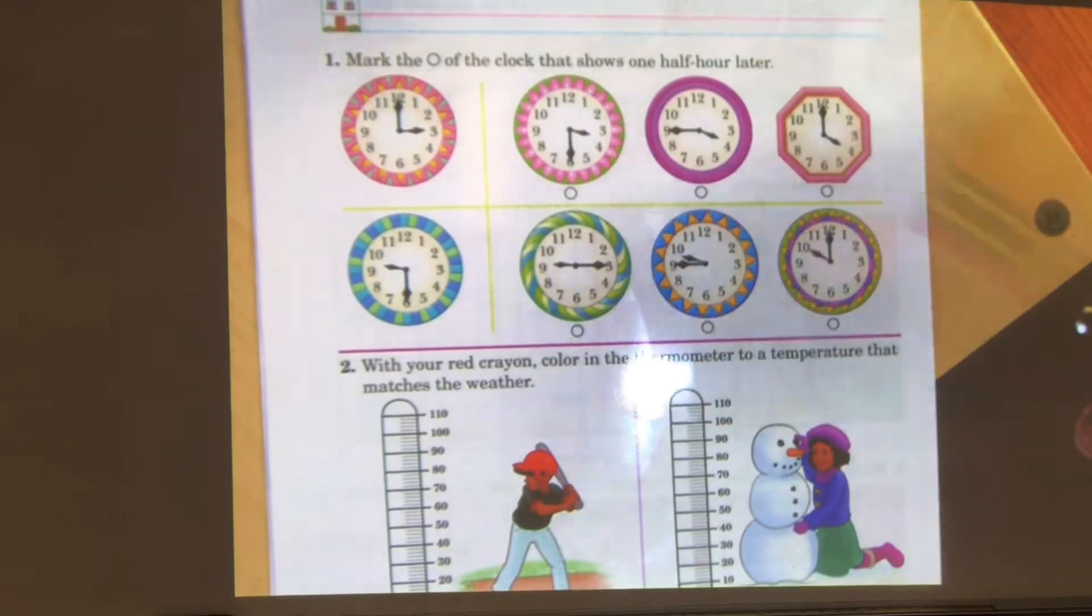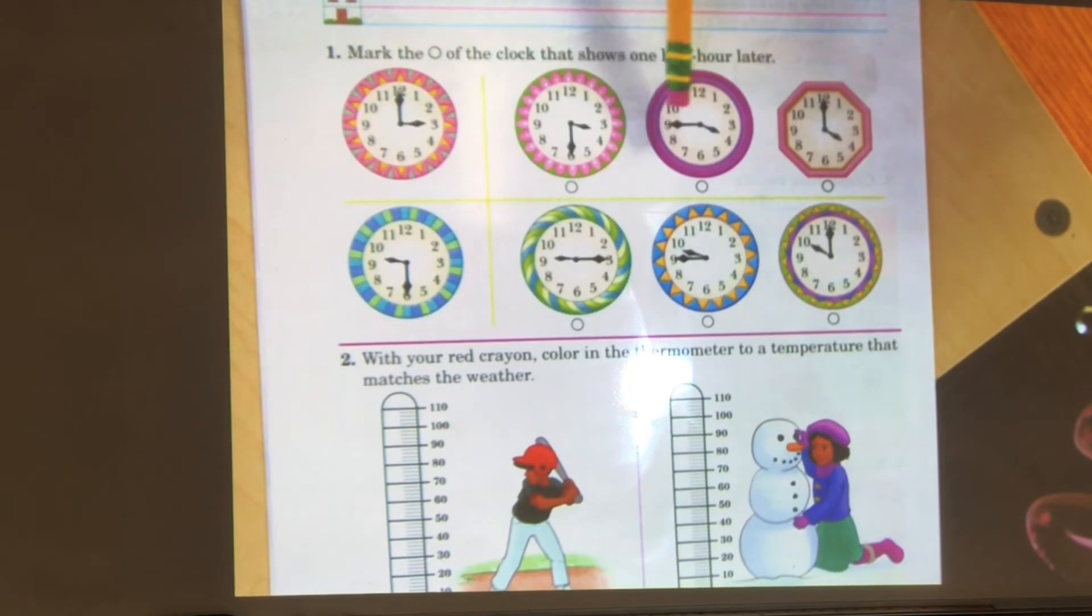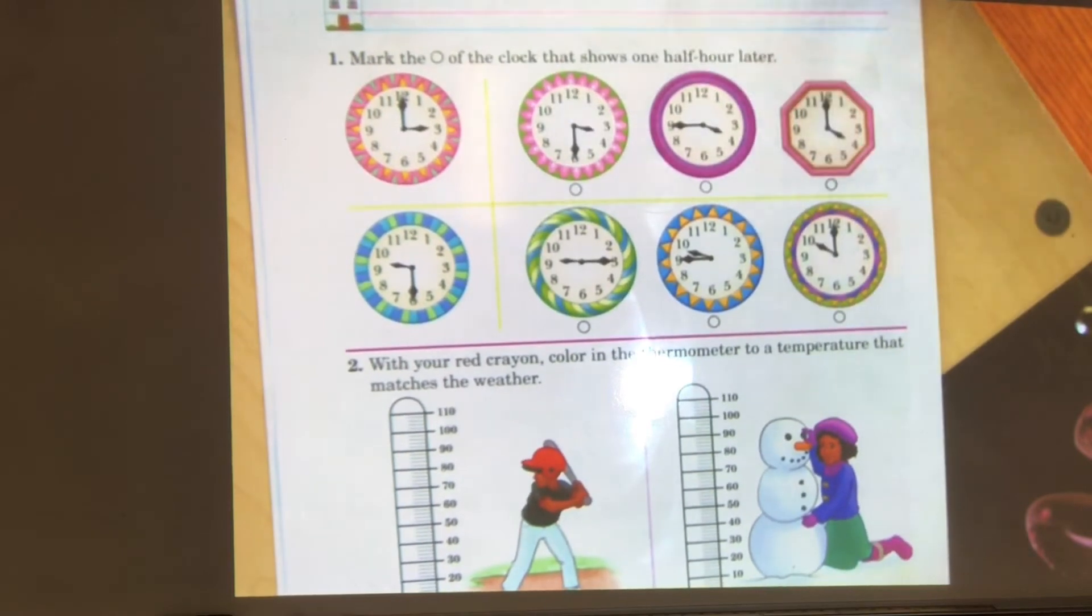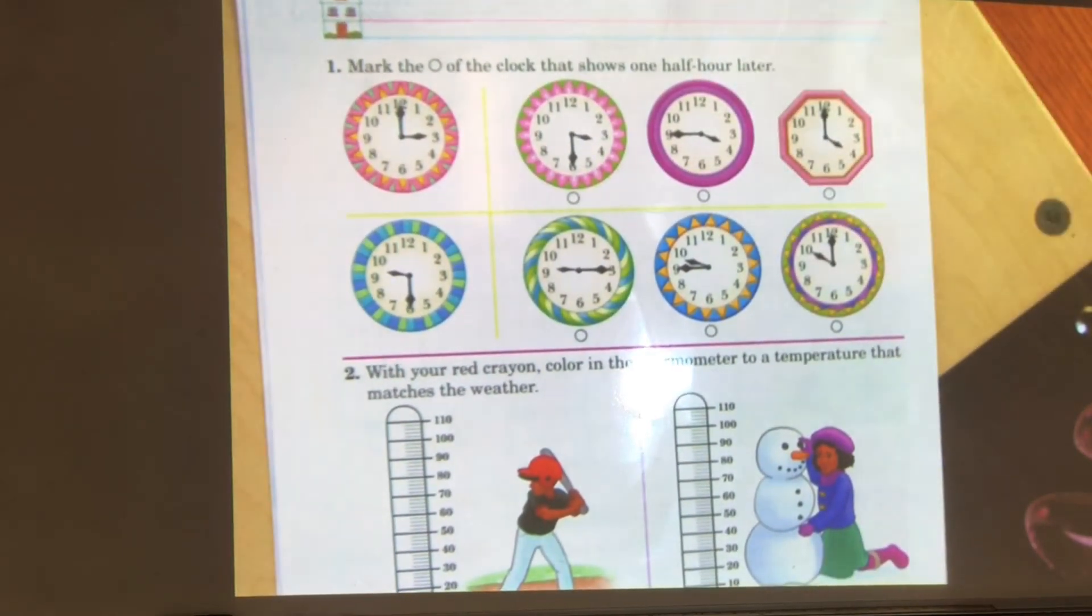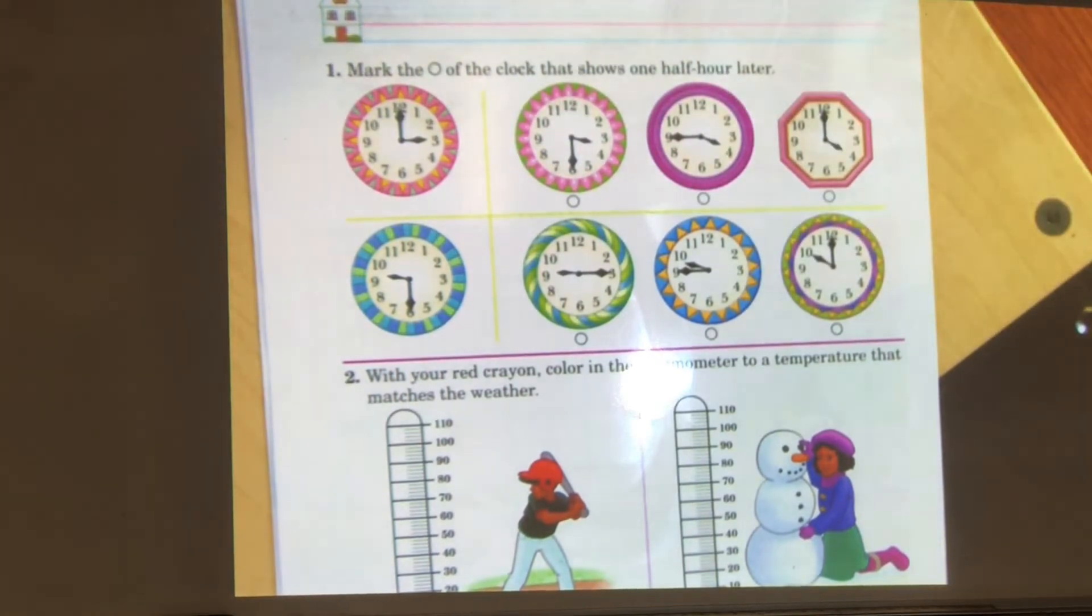Which clock shows 3:30? If you take a look at this clock, this clock shows 3:30. This clock shows 3:45. And this clock shows four o'clock. Which one is one half hour later than three o'clock? If you select this one, which says 3:30, then you are correct.